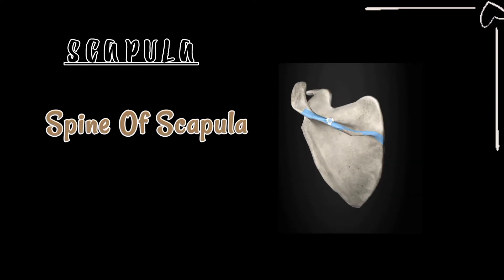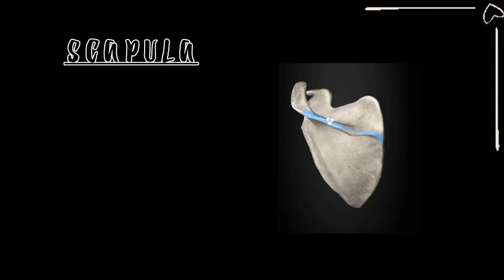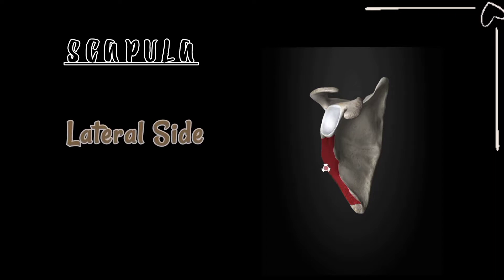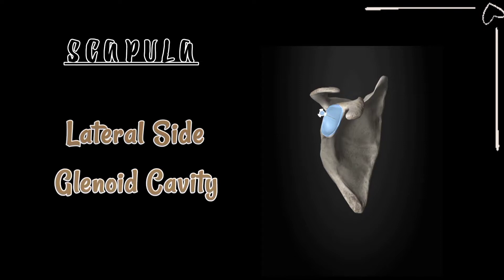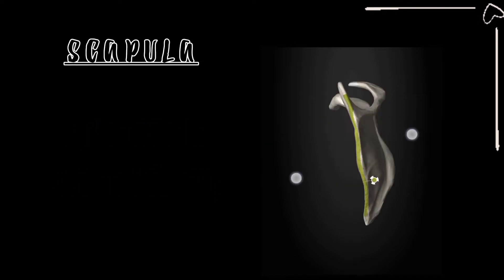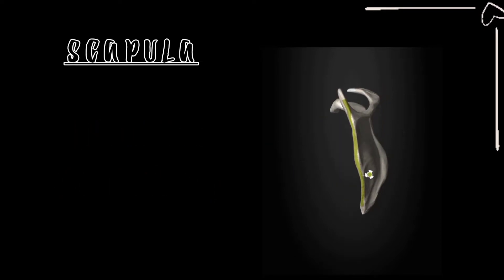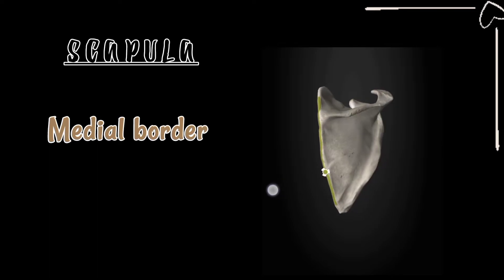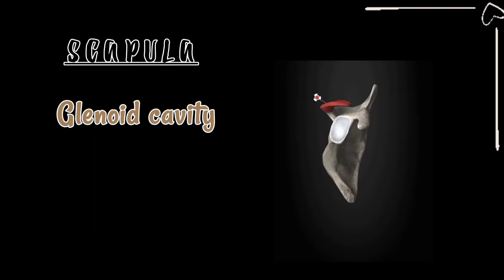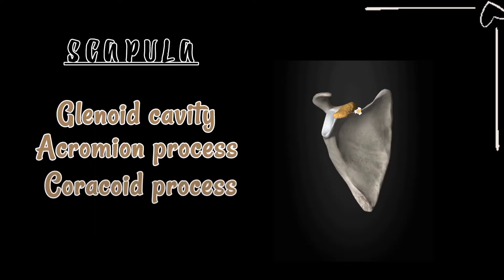Regarding the lateral and medial sides, the lateral side is more prominent due to the presence of the glenoid cavity. The medial border of the scapula is more of a plain border, while on the lateral border you can see the glenoid cavity, the acromion process, and the coracoid process. These three structures are present on the lateral aspect of the scapula bone.